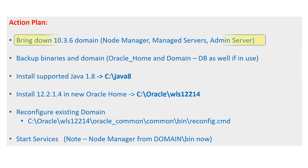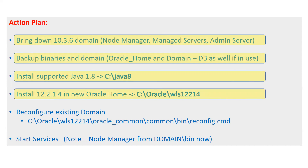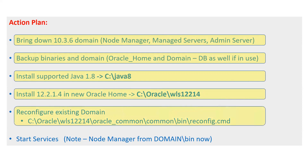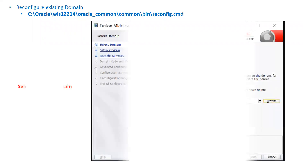This is my high-level action plan: first, bring down your complete domain; second, take the binaries and domain backup; third, install your latest Java; fourth, install the latest 12.2.1.4 WebLogic software; then reconfigure my existing domain; and then start my services. For the reconfiguration of the domain, once you have installed your new WebLogic Server, go inside your new Oracle home, then Oracle_common, then the common/bin directory. There you will see a script called reconfig.cmd on Windows and reconfig.sh on Linux systems.